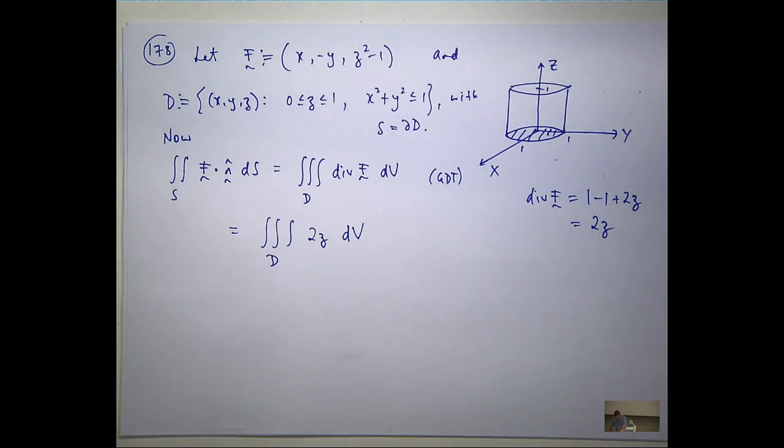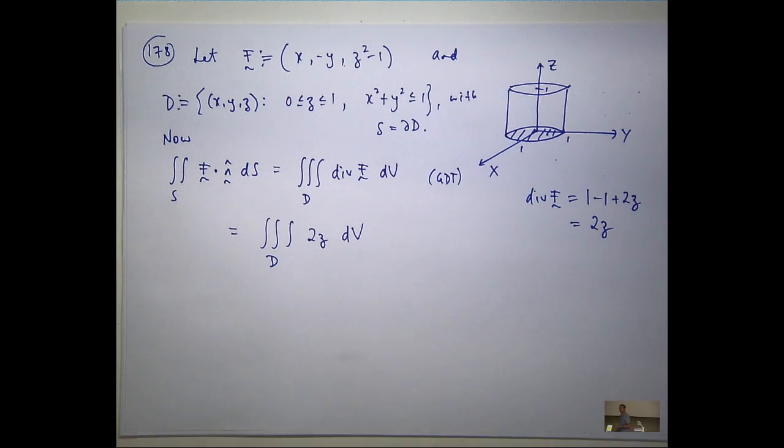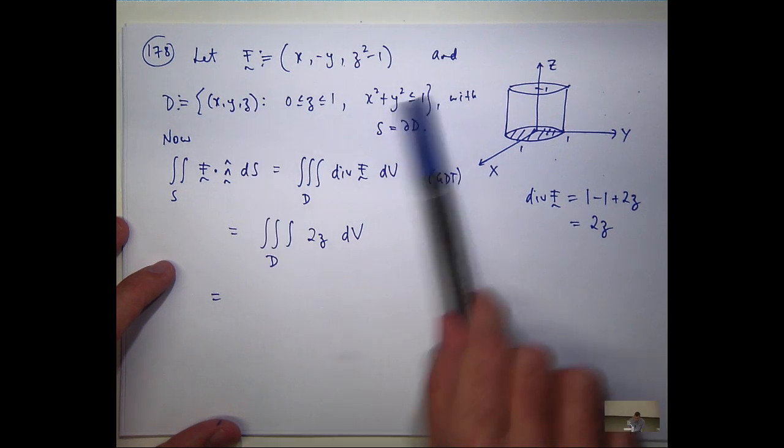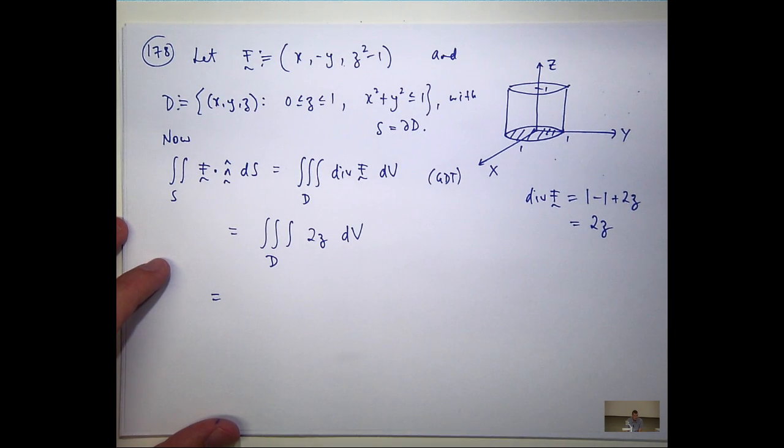Alright, so let's replace div f with 2z. And now it's up to me to set up and evaluate this triple integral. So we're sort of back where we were looking at triple integrals. So how am I going to describe the region D? I've kind of got a description up here, but it's not that great. Can anyone suggest a coordinate system to work with you?